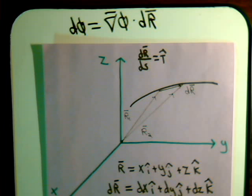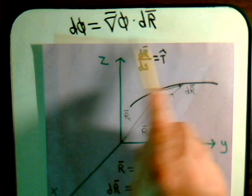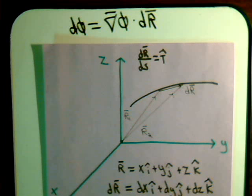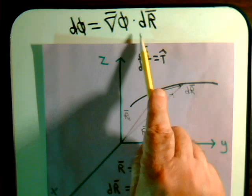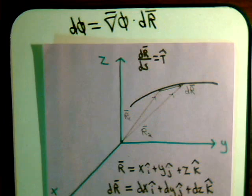In a previous video in our series on vector analysis, we had an introductory video concerning the del operator and the gradient vector. We had derived this equation that the differential change of a scalar function is equal to the dot product of its gradient with the differential displacement in the position vector. And now we're going to use that knowledge in this video to discuss directional derivatives.